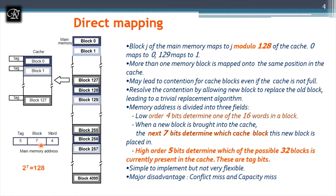The remaining 5 bits go to tag lines. Now, out of the 0 to 1495 blocks in main memory, to place them in the small cache using direct mapping: take any block, for example block 129. Since there is no block 129 in cache, we need a standard technique to find a space.